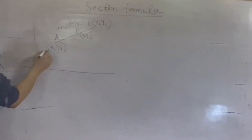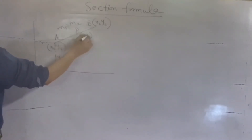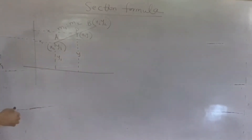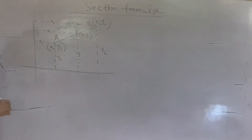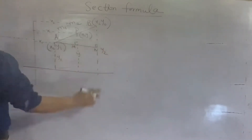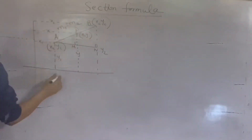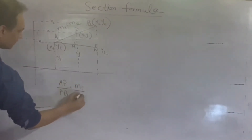अब यदि A के coordinates X1, Y1 हैं, तो उसका मतलब उसका जो ये वाला distance है वो X1 होता है, और ये जो height है वो Y1 होती है। इसी तरह P के coordinates X, Y हैं — मतलब ये वाला distance X है, ये वाला distance Y है। Similarly B के लिए ये X2 है, ये Y2। हमने A से एक perpendicular डाल दिया। Angles M और N ये 90-90 degree के होंगे। हमें AP और PB का ratio पता है — M1:M2 है। AP upon PB हम जानते हैं ये है M1 upon M2।